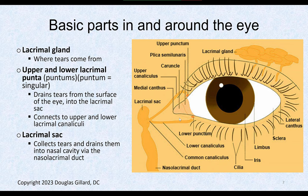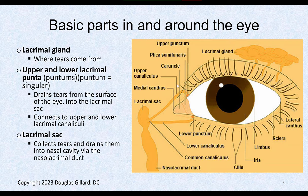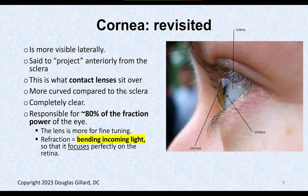There's a meaty little part in the corner of the eye called the caruncle. It just covers some sebaceous glands and doesn't do that much, so it's not super important.